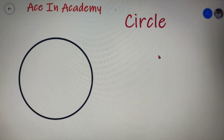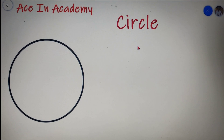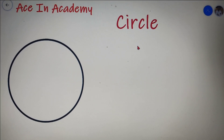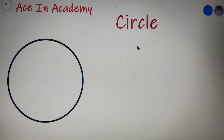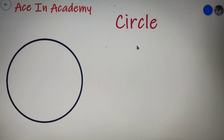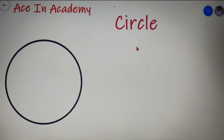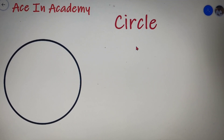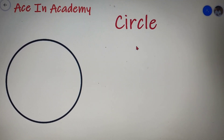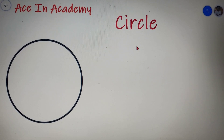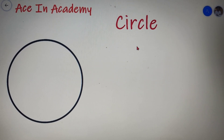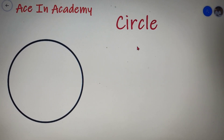Hello everyone, I'm Shwam Pasari and welcome to ASIN Academy. As you have seen from the title of this video, we will be learning about circles. We will discuss all the basic points about the circle: the center, the radius, the diameter, what is the chord, the circumference, perimeter, and the area of the circle. At the end we will also discuss some interesting points about the circle. So without wasting any further time, let's begin.